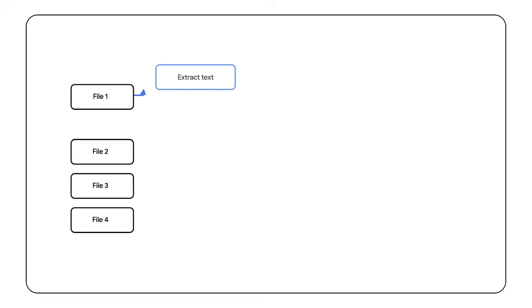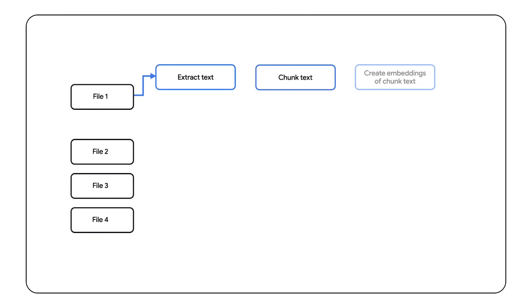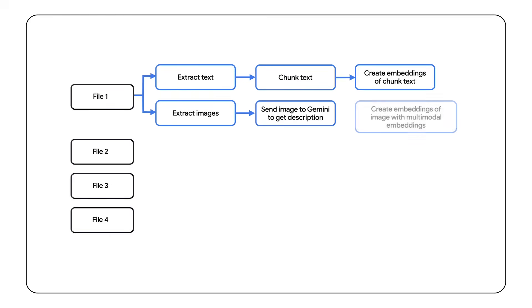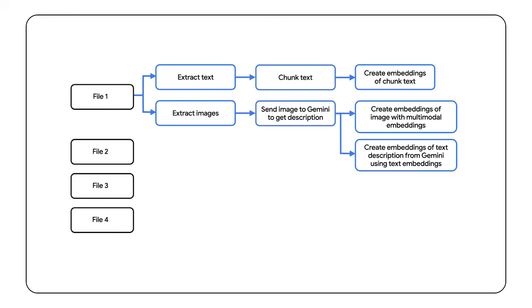So this is roughly how the flow looks. For text, it remains the same. But for images, we convert the image description into both text embeddings and image embeddings using Vertex multimodal embeddings. For the next section, if you'd like to follow along, please check out the link in the description. If you'd like to skip ahead to see the final working system, feel free to jump to the next chapter.